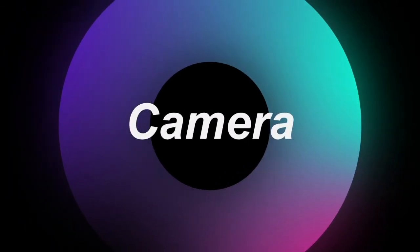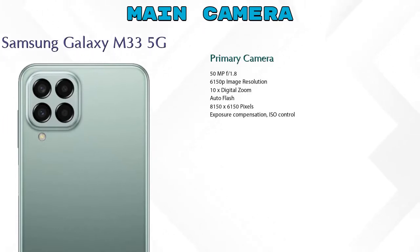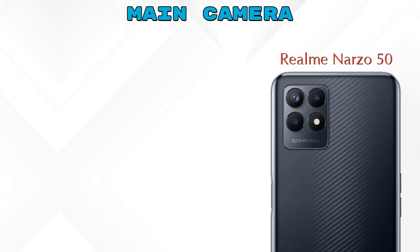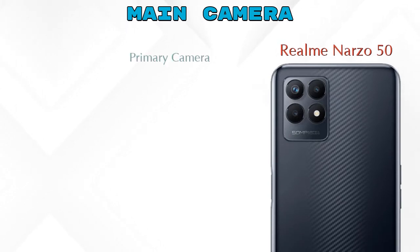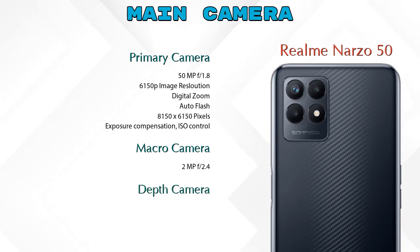Let's see details about our favorite feature — camera. First, let's talk about the rear camera. The Galaxy M33 5G has four cameras: a primary camera, ultra-wide angle camera, macro camera, and depth camera. The Narzo 50 has three cameras: a primary camera, macro camera, and depth camera.